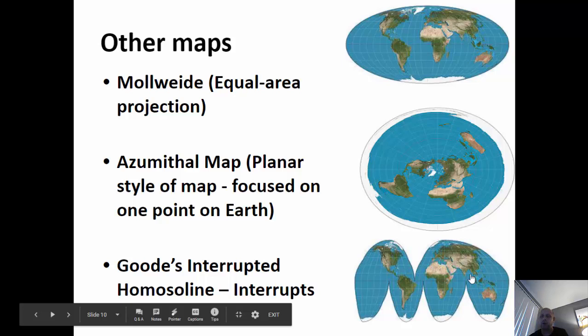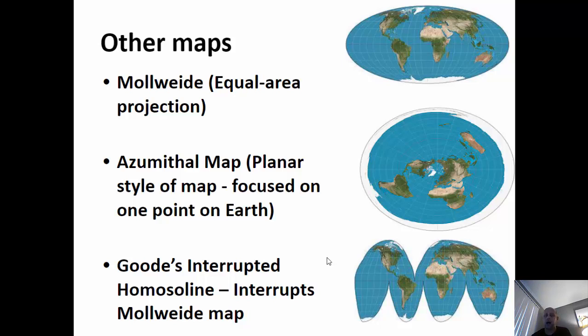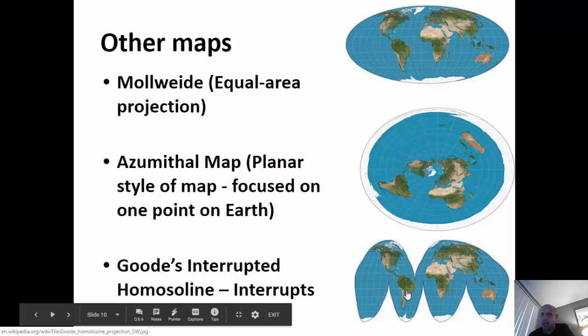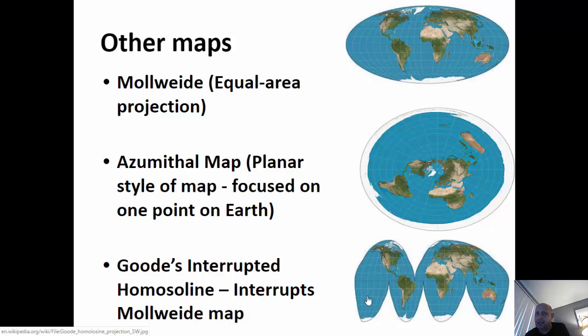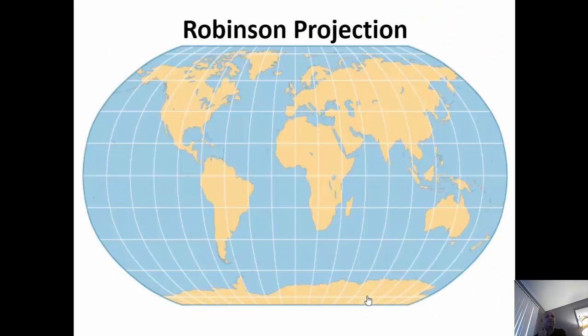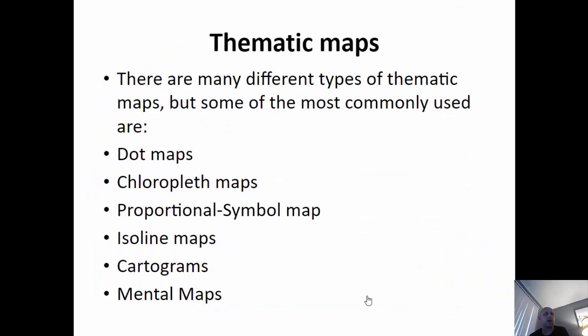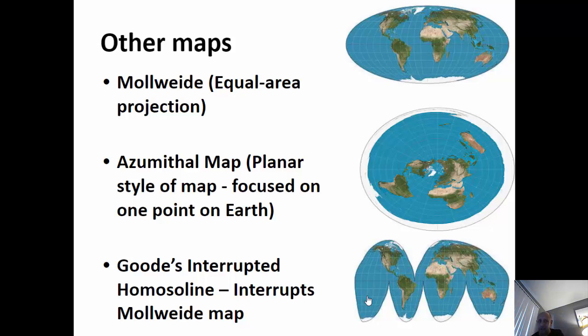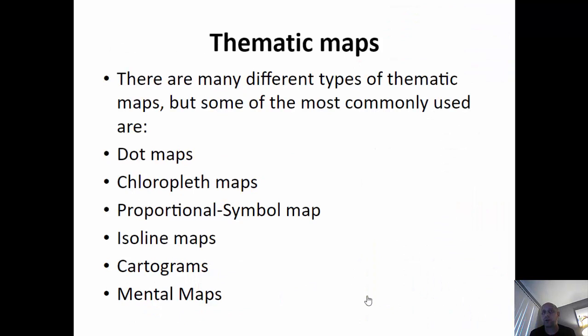The most modern style is called the Goode's Interrupted Homolosine map. What it does is take the best of the Mollweide projection and then cut out areas where nobody lives. Since human geographers like to study people and where they are distributed, studying parts of the ocean with nobody there isn't effective. Goode's Interrupted has taken that Mollweide projection and cut out the parts where nobody lives so you can focus on areas that have permanent human settlement. So your historic map types are: Mercator, Peters, Robinson, Mollweide, Azimuthal, and Goode's Interrupted.